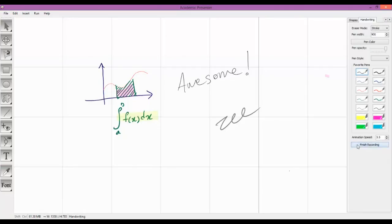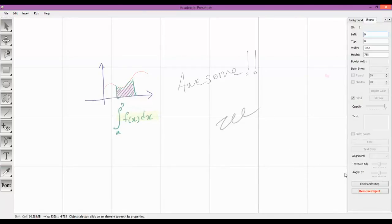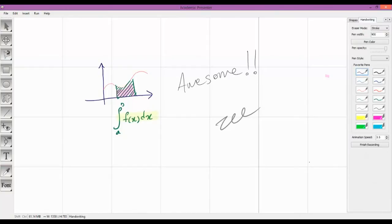After finishing the annotation, you can terminate the recording process by clicking on finish recording. The software encapsulates the annotation inside the image object. Users can edit the annotation by selecting the image and pressing edit handwriting.